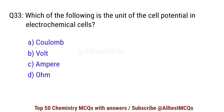Question number 33. Which of the following is the unit of cell potential in electrochemical cells? Correct option is B: volt.